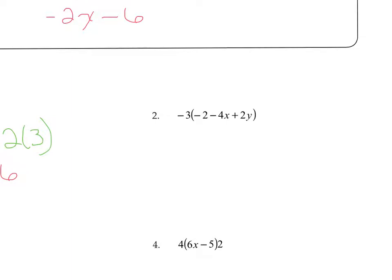Here we're going to do the same thing — multiply times negative 3. Negative 3 times negative 2 is positive 6. Negative 3 times negative 4x is positive 12x — negative times negative makes positive. Negative 3 times 2y is negative 6y. So this is now our new expression, which is a simplified form. So we're simplifying expressions.